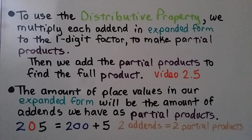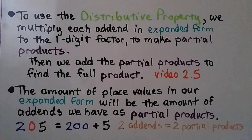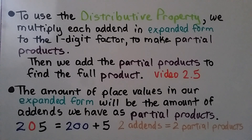To use the distributive property, we multiply each addend in the expanded form by the one-digit factor to make partial products, then we add the partial products to find the full product — we learned that in the last video, 2.5. The number of place values in our expanded form equals the number of partial products we will have.